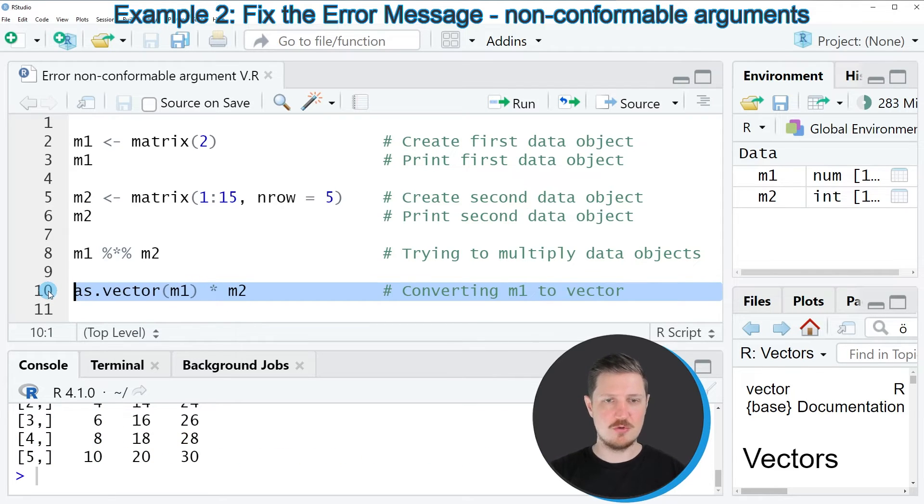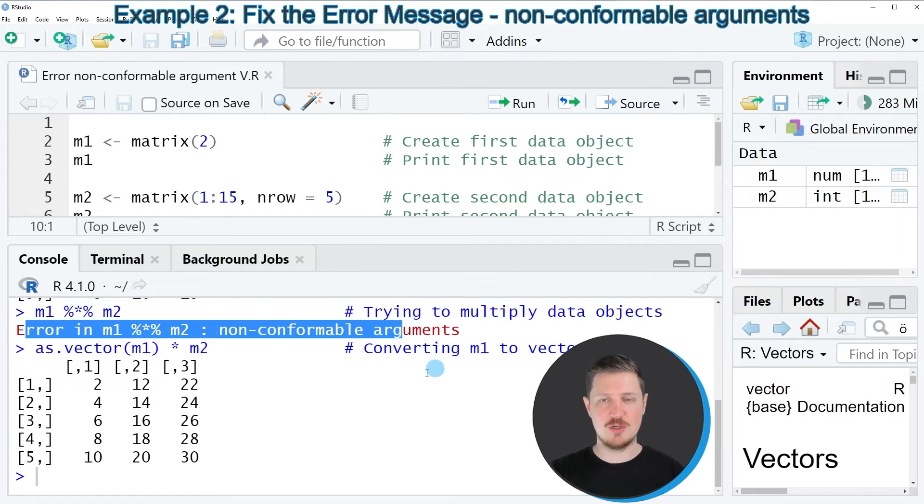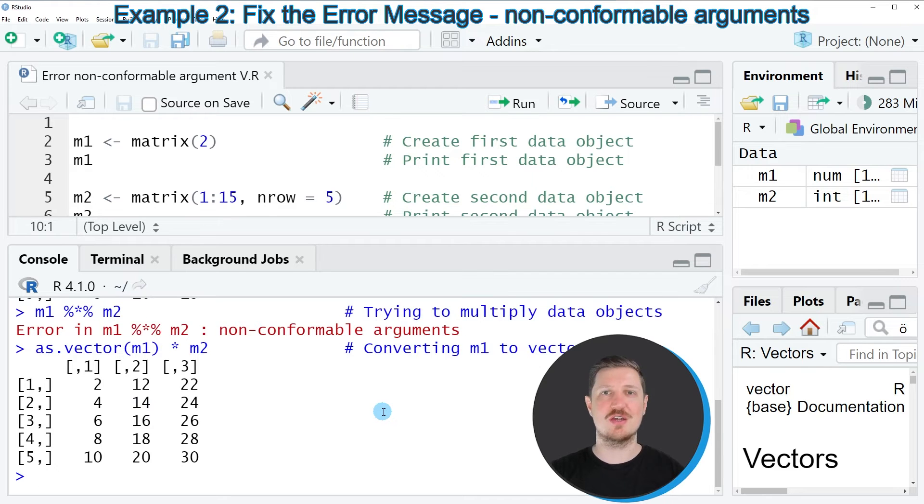After running line 10 of the code you can see that a proper output is returned at the bottom in the RStudio console which shows the values in our matrix m2 multiplied with the value 2. You can see that this error message non-conformable arguments is not returned anymore.